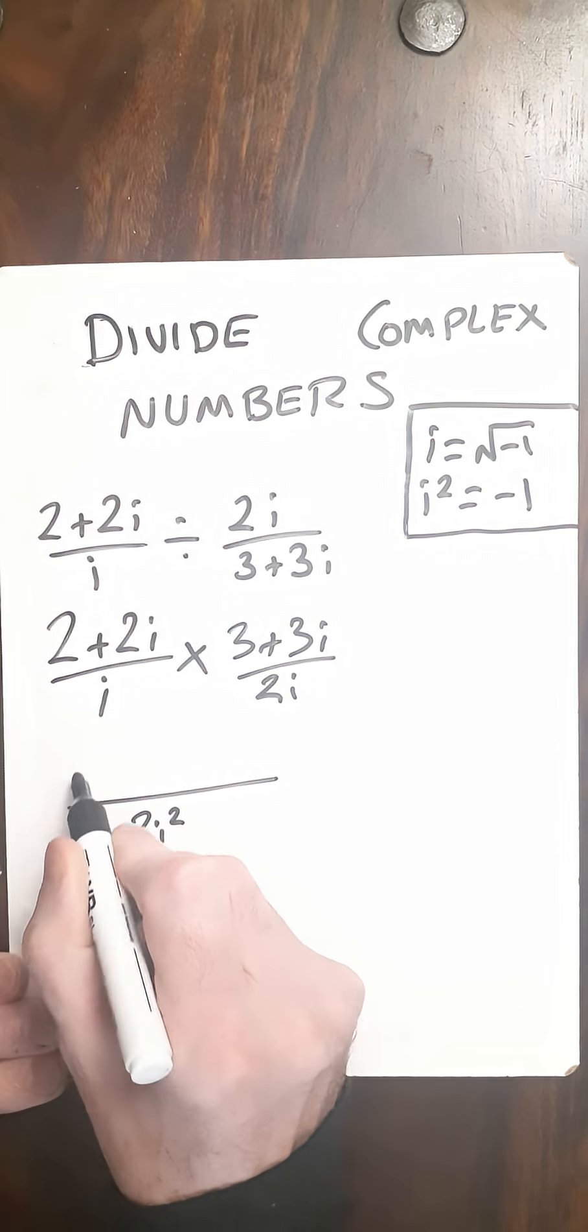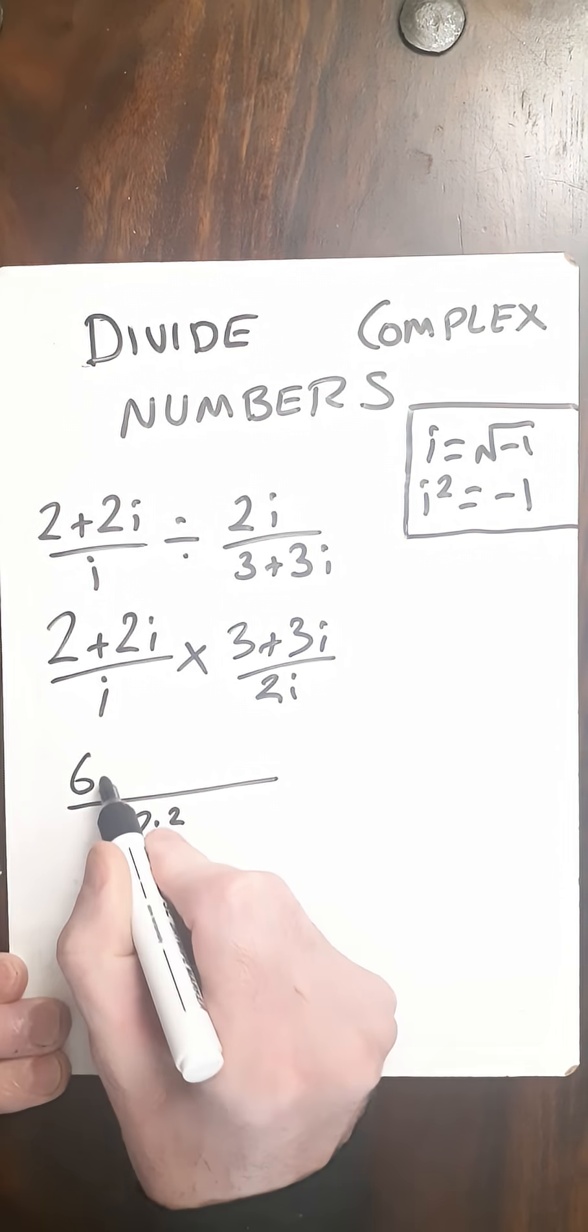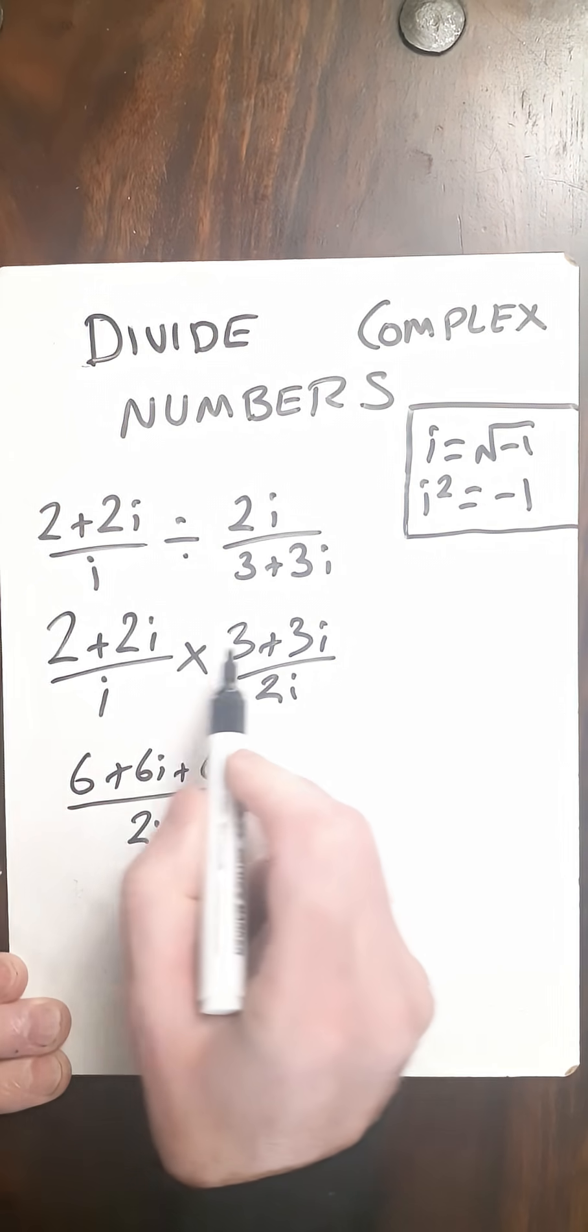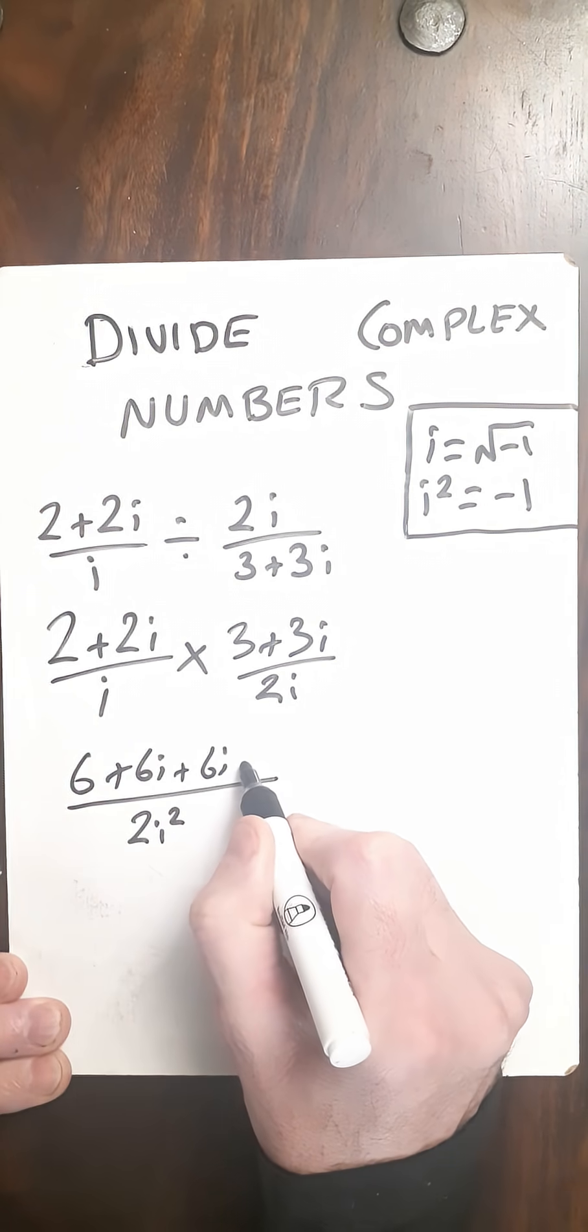Numerator, 2 times 3 is 6, 2 times 3i is 6i, 2i times 3 is another 6i, and 2i times 3i is 6i squared.